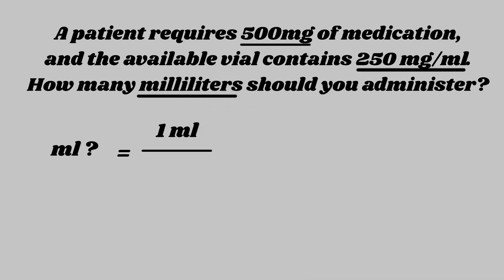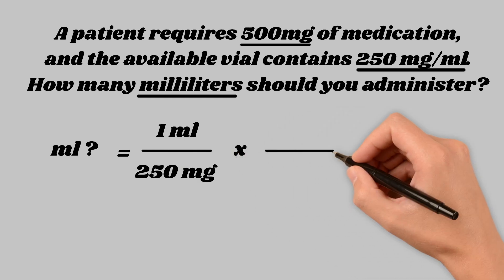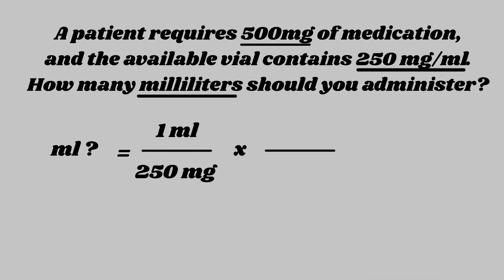So what number contains mLs? Remember, if two numbers are together — like 250 milligrams per mL — we can't separate those numbers, but we can flip them on top of each other. So instead of 250 milligrams per mL, we'll do 1 mL over 250 milligrams. This way we keep mLs on top. Our next step is figuring out what we need to get rid of. We're looking for mLs, so we need to get rid of milligrams.